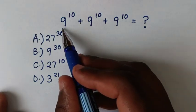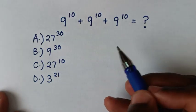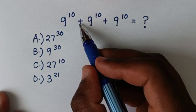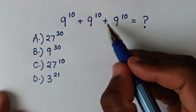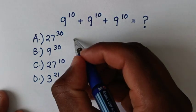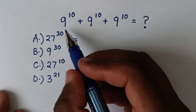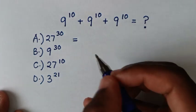Hello, you are welcome to solve this math problem which is 9^10 + 9^10 + 9^10. It will be equal to, from here 9^10 is common, then we'll take 9^10 out of the bracket.